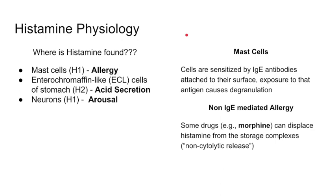Mast cells are sensitized by IgE antibodies that attach to their surface. When they're exposed to allergens like pollen, they cause degranulation and make us feel like crap. Also, very high yield especially for the boards: non-IgE-mediated allergies. Drugs — a lot of the time they'll talk about morphine and vancomycin — can cause histamine release from their storage sites, but that's not an immunologic reaction. It's not an actual allergic reaction. When you go into your third year, there are a lot of patients who have apparent allergies to morphine and vancomycin when in reality it's a non-IgE-mediated reaction that will occur every time you give that drug at a high enough rate.